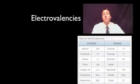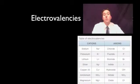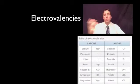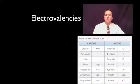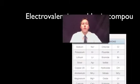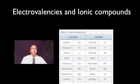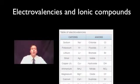The electrovalency of an ion tells us how many positive or negative charges it has. If we know the electrovalency we're able to figure out the molecular formula of ionic compounds.